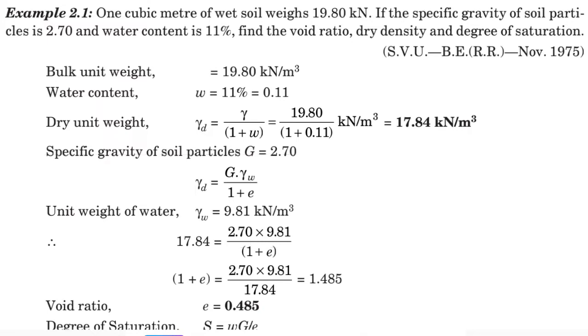So the question is, one cubic meter of wet soil weighs 19.80 kN. If the specific gravity of soil particles is 2.70 and water content is 11%, find the void ratio, dry density, and degree of saturation.